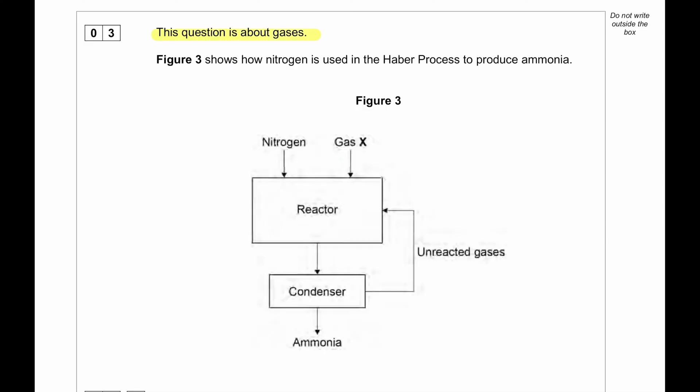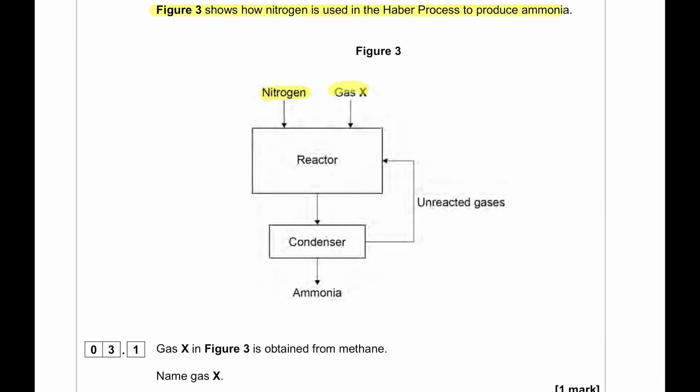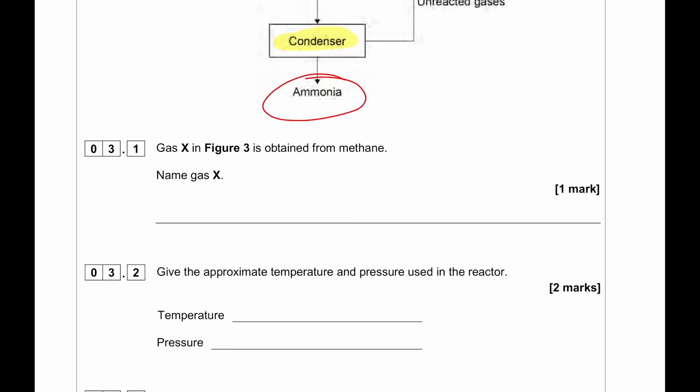This question is about gases. Figure 3 shows how nitrogen is used in the Haber process to produce ammonia. We can see the nitrogen gas and then a gas X. So in order to produce ammonia, the gas X must be hydrogen. Inside the reactor, they react and then the condenser condenses the gases. However, the nitrogen and hydrogen does not condense. They go back into the unreacted gases and back to the reactor. Only the ammonia, the product gets condensed because it has a very high boiling point. Gas X in figure 3 is obtained from methane. So gas X is hydrogen.